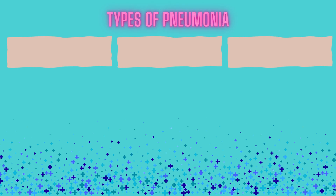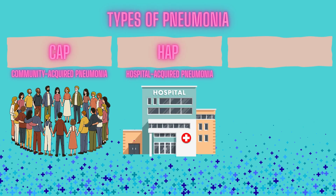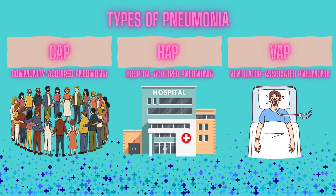We classify pneumonia into three main categories: community-acquired pneumonia, which is the most common; hospital-acquired pneumonia, which appears after 48 hours of hospitalization; and ventilator-associated pneumonia, a serious infection in intubated patients.